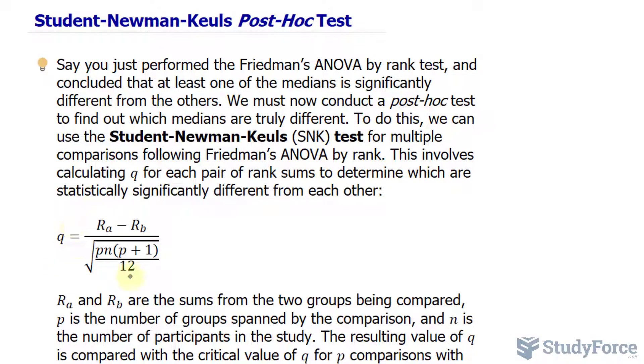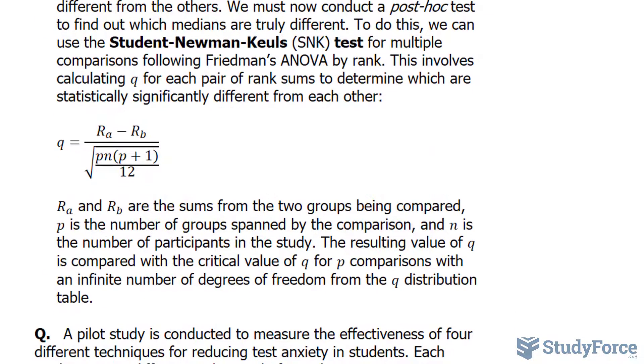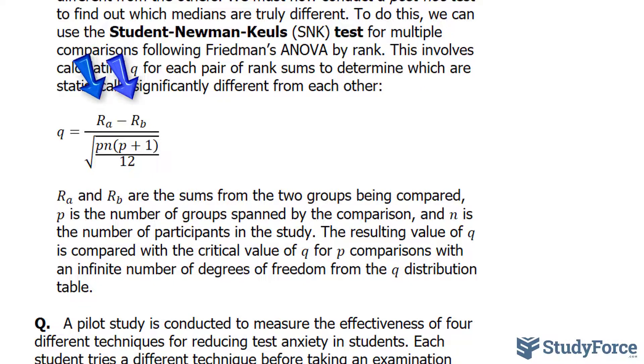To calculate Q, we'll be using the formula shown underneath. R sub A and R sub B are the sums from the two groups being compared. P is the number of groups spanned by the comparison, and N is the number of participants in the study. The resulting value of Q is compared with the critical value of Q and P comparisons with an infinite number of degrees of freedom from the Q distribution table. We'll discuss that later once we start answering the question.